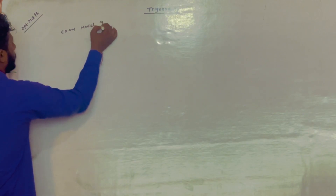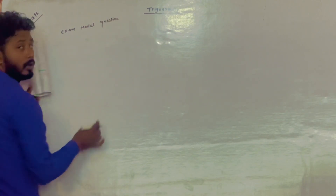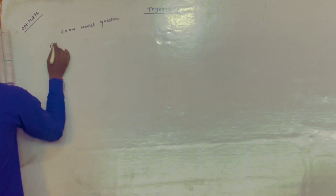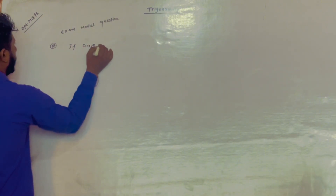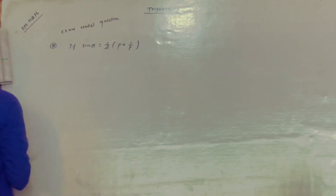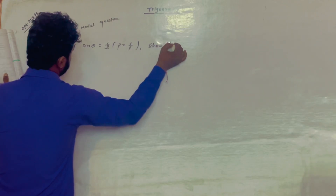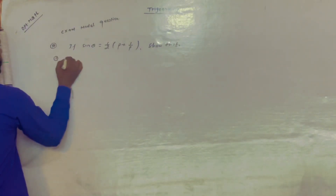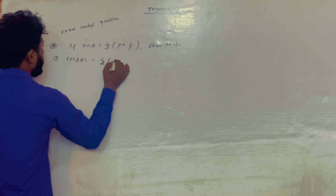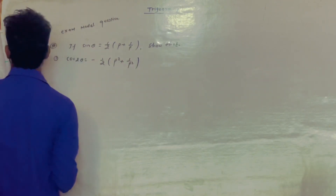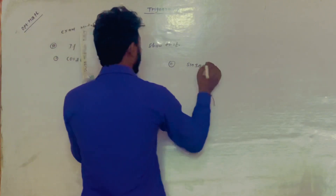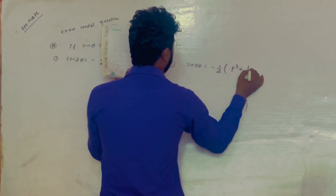Exam model question. Full of the writing — p plus 1 by p. So cos 2 theta equals to minus 1 by 2, p squared plus 1 by p squared. Do it number 1: sin 3 theta equals to minus 1 by 2, p cubed plus 1 by p cubed.